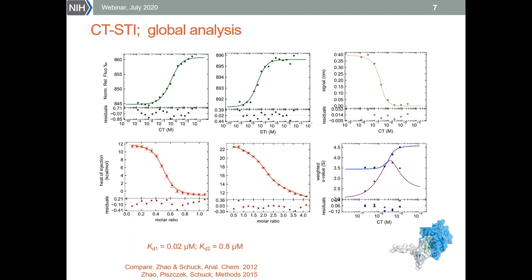One way to circumvent this problem is to combine different complementary data sets. When we take all this data and feed them all together in global analysis, we can get precise information on both binding constant values.